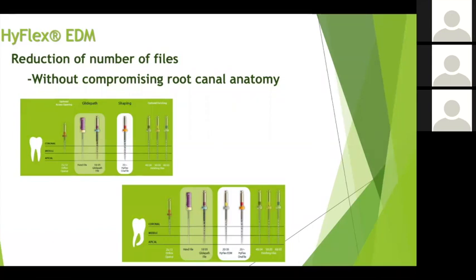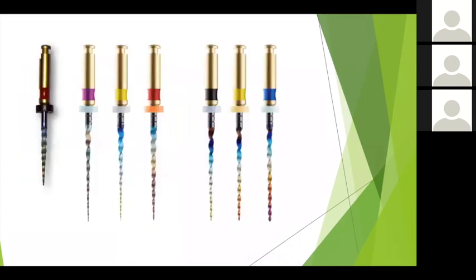With the EDM system you can very easily do great cases with fewer files. I do most of my cases with pretty much three files today. For a straightforward case without a lot of curvature: use an orifice opener, scout the canal with hand files 8, 10, 15, get your working length, run the glide path file (10, 05), then shape with the 25, 05 preparation file, and finish with the one file (25, 08). For larger canals — distal roots of lower molars, palatal roots of upper molars — I typically finish with the 40, 04 or 50, 03.